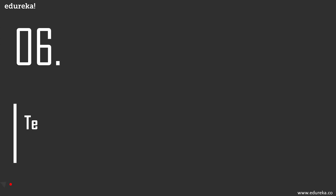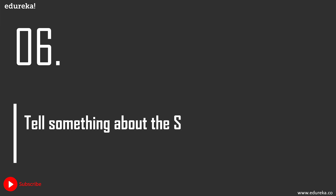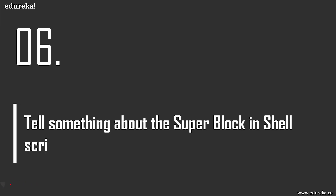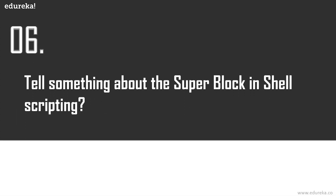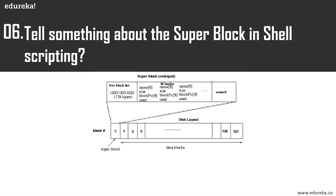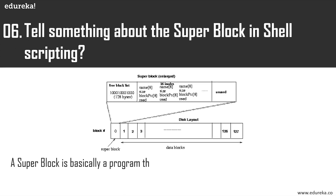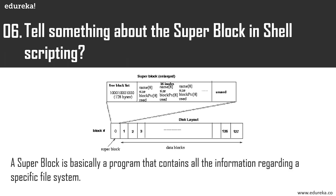What is the super block in shell scripting? The super block is a program that contains all the information regarding a specific file system. It contains information such as the size of the file, the block size used, the number of free data blocks, and the list of free inodes and data blocks.